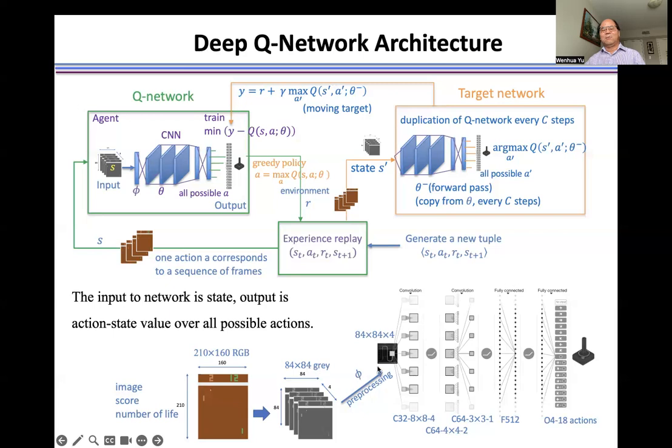And then we stack four of them together as input to the Q network. Here are three convolutional layers, and one fully-connected layer, and one output layer.